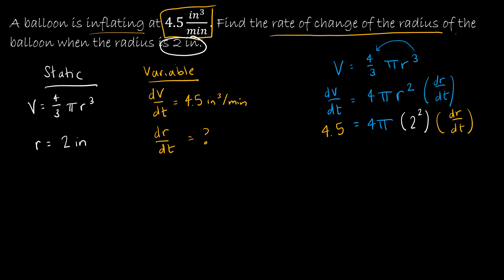So from here, I'm just going to simplify what I can. This side's still 4.5. This side, I end up with 16π. 2 squared is 4 times 4 is 16, and then dr dt.